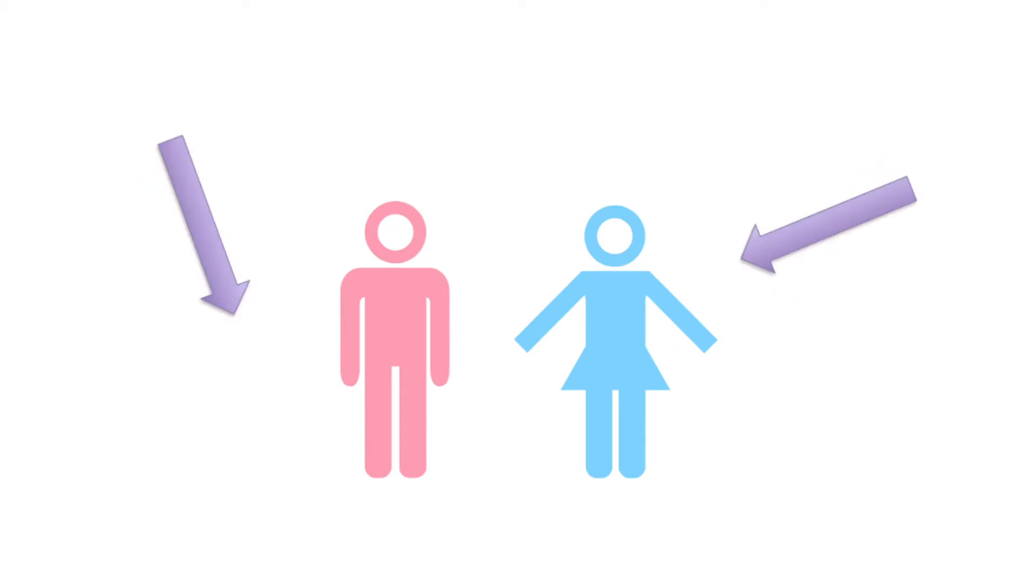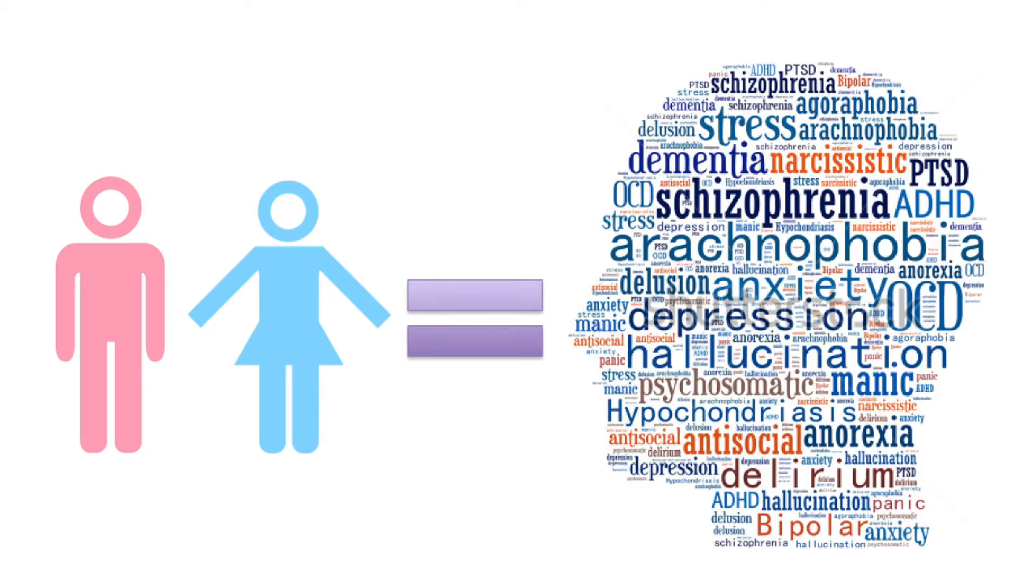It is unclear what causes transgender identities. For many years, transgender identity was considered a mental disorder caused by psychological and environmental factors, such as parenting and trauma. Therefore, much of the psychological research has been done based on the premise that transgenderism is a psychological disturbance.